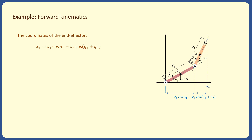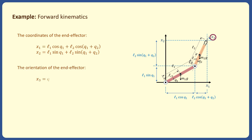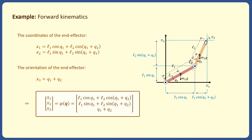Similarly, the x2 component of the end effector position equals l1 sine(q1) plus l2 sine(q1 + q2). The angle x3 is equal to q1 plus q2. So the forward kinematics can be written in this form — it is a mapping from the joint variables q to the end effector's configuration x. We can plug in any vector q into this equation and obtain x, and note that for any given vector q, we get a unique vector x.